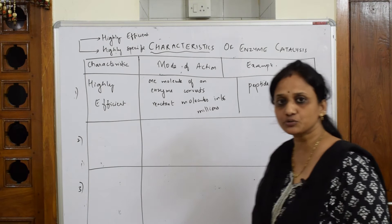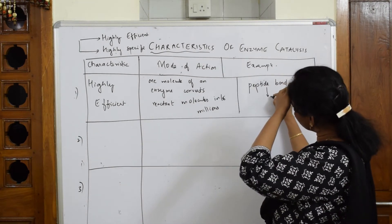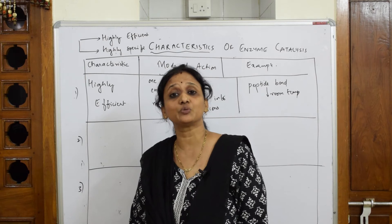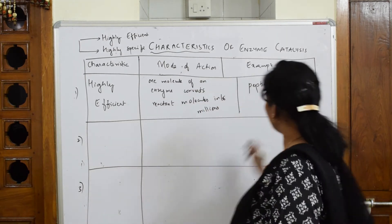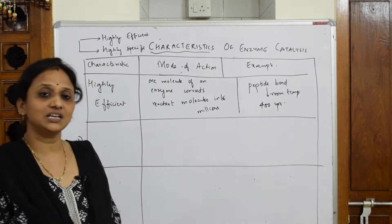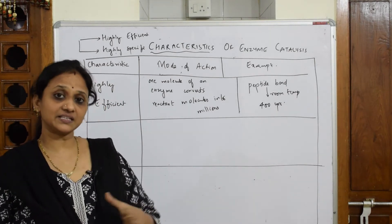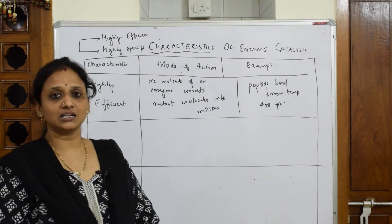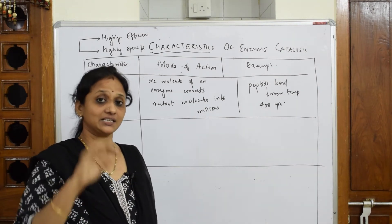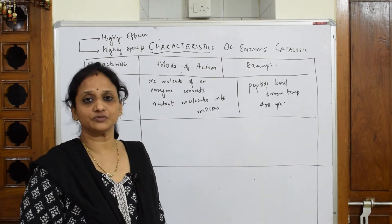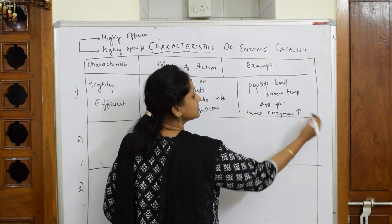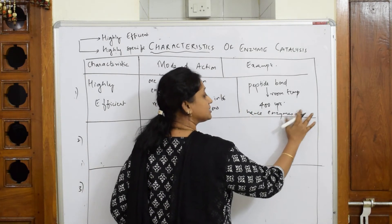You already know what a peptide bond is. If I have to break a peptide bond at room temperature, do you know how much time it is going to take? It is going to take 400 years to break that peptide bond at room temperature. Now if I add an enzyme to this, immediately the rate of the reaction increases — it allows peptide bond cleavage and increases the efficiency of the reaction. Hence, enzyme increases the efficiency of the reaction.